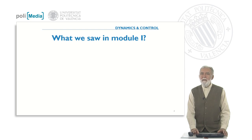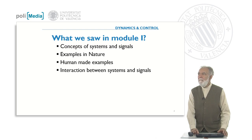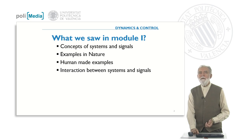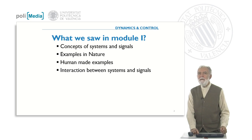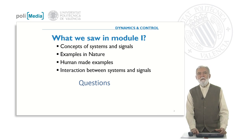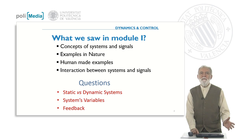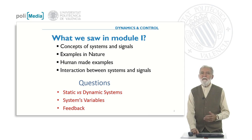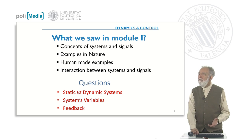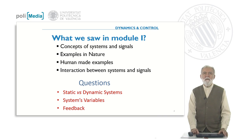What we have seen in module one: we saw the concepts of systems and signals, some examples in nature, human-made examples, and the interaction between systems and signals. The questions I'm going to forward to you are related with the ideas of whether a system is static or dynamic, which are the variables within a system, and the concept of feedback — which I think are the most important concepts.